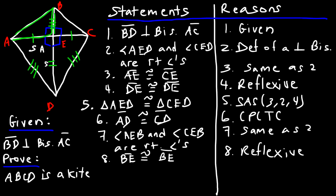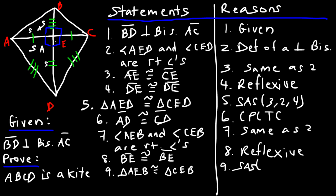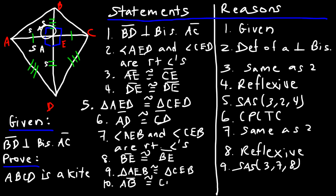We now have enough information to show the next pair of triangles are congruent. Statement nine: triangle AEB is congruent to triangle CEB by the SAS postulate, using statements three, seven, and eight. By CPCTC in statement ten, AB is congruent to CB.